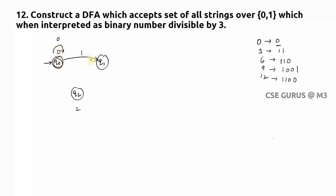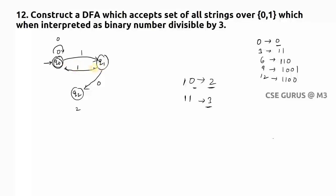Now for q1 transitions: you reach q1 from q0 by giving input 1. From q1 on input 0, the string becomes '10' in binary, which is 2 in decimal — remainder 2 — so it goes to q2. From q1 on input 1, the string becomes '11' in binary, which is 3 — remainder 0 — so it goes to q0.